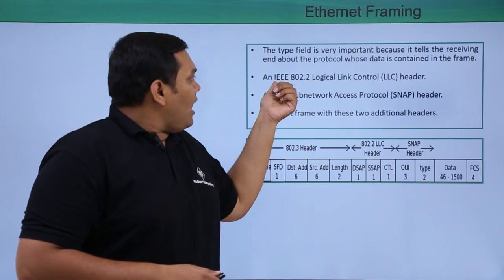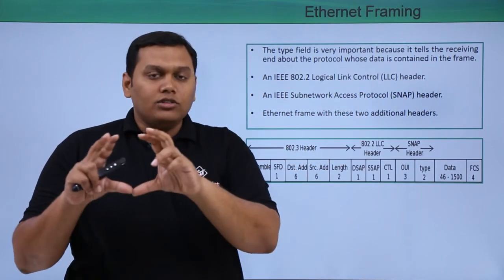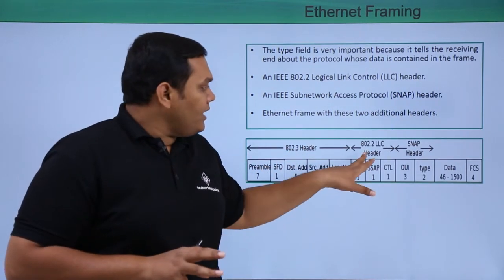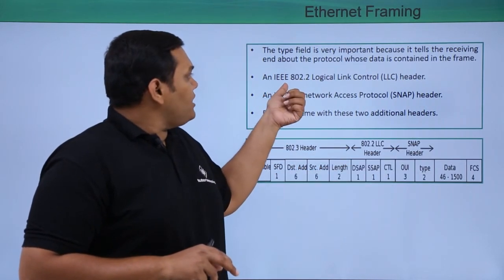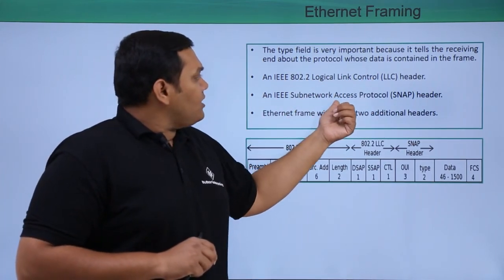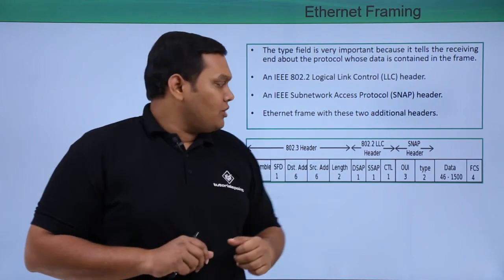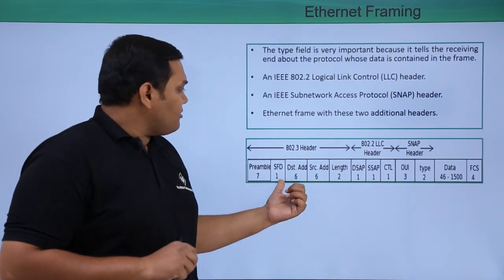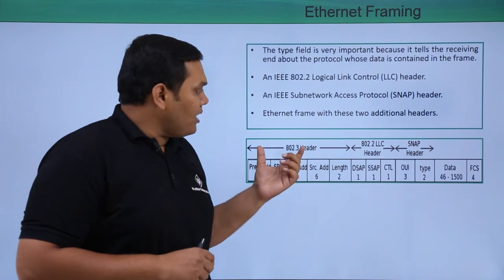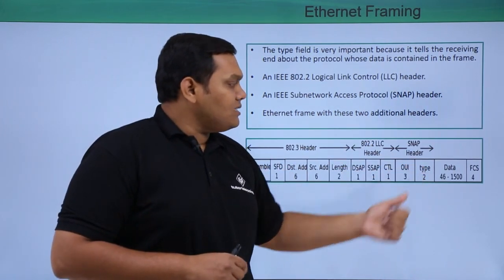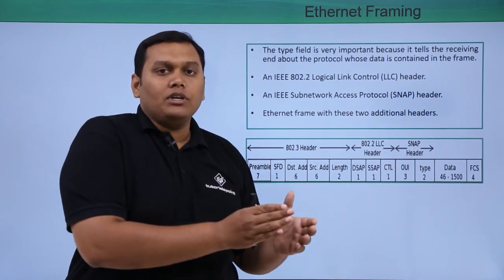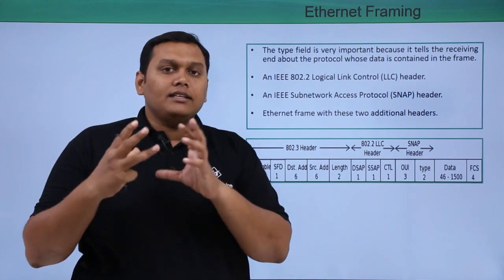Apart from the 802.3 header — which includes preamble, SFD, destination address, source address, and length — there are two additional headers: the IEEE 802.2 LLC (Logical Link Control) header and the SNAP header. Based on these headers, frames are transferred through the network and encapsulated into packets at the data link layer.